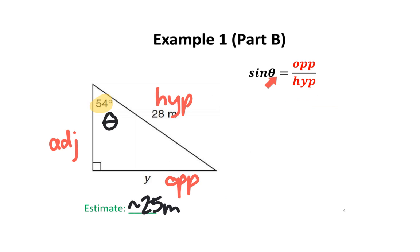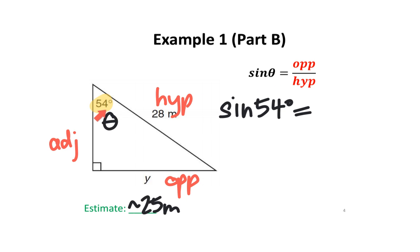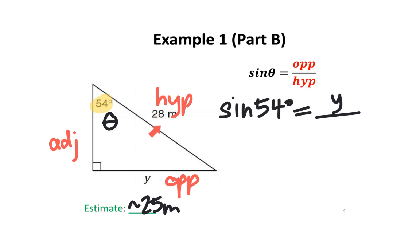Looking at the sine ratio, we're going to replace theta with 54 degrees, replace opposite with the letter Y, and replace hypotenuse with the number 28.